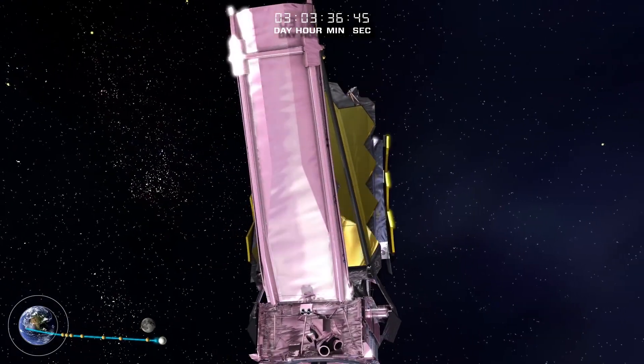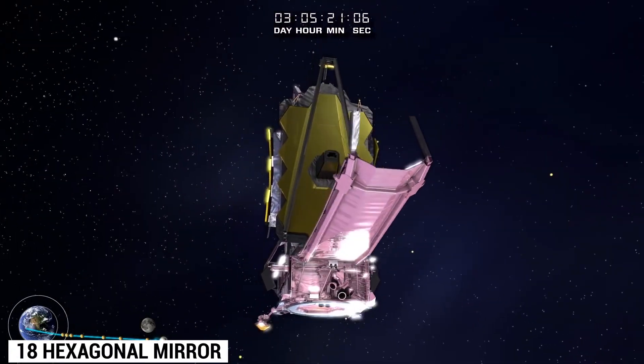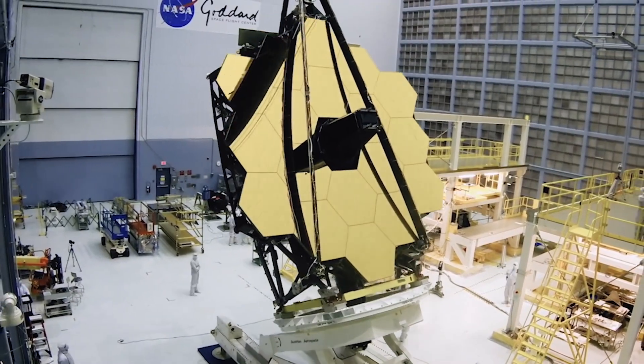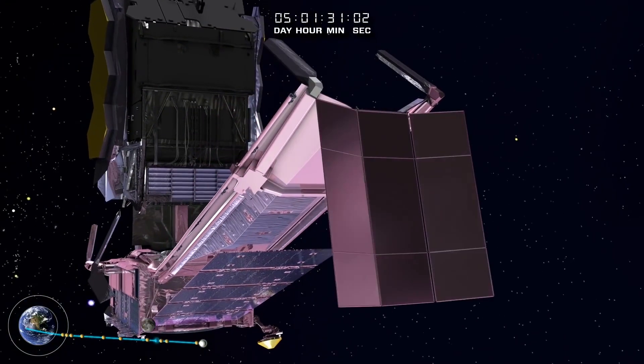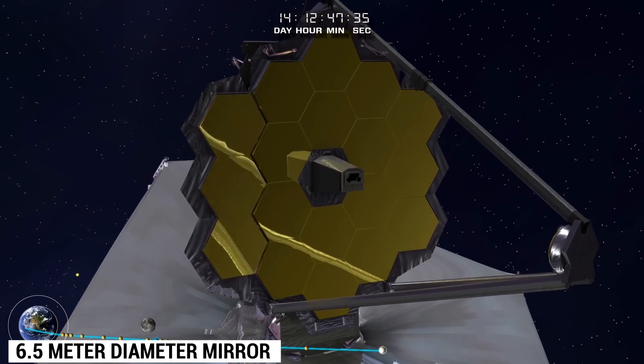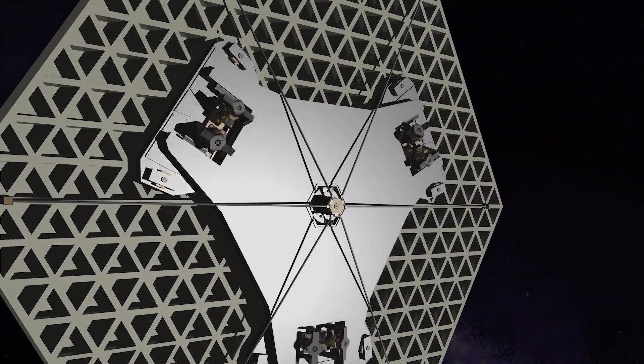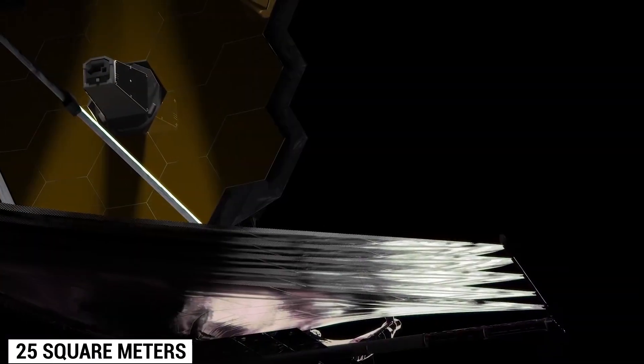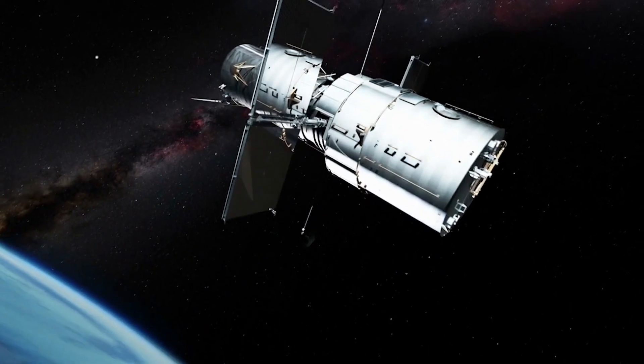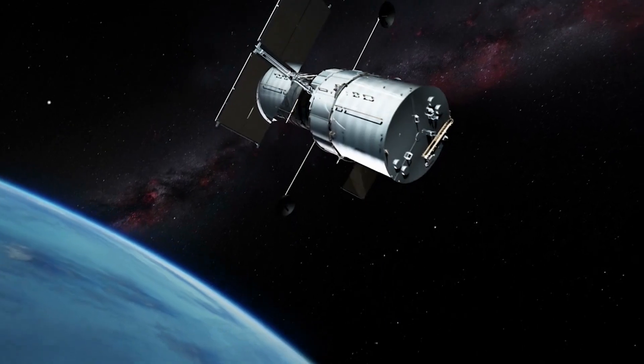The telescope primarily consists of about 18 hexagonal mirror segments of gold-plated beryllium, which together creates a huge 6.5-meter diameter mirror that gives the James Webb Telescope a light-collecting area of about 25 square meters. That in itself is about six times more than the Hubble Space Telescope.